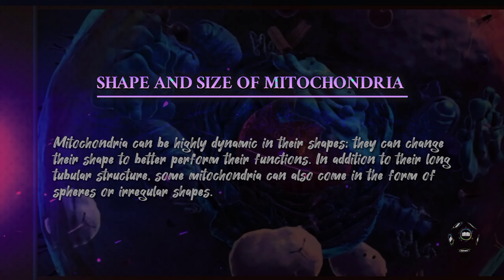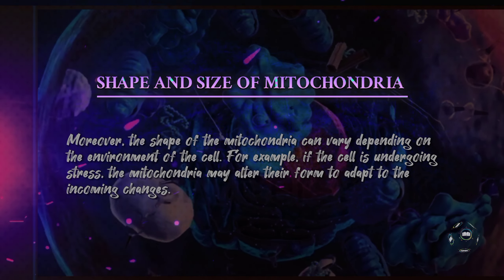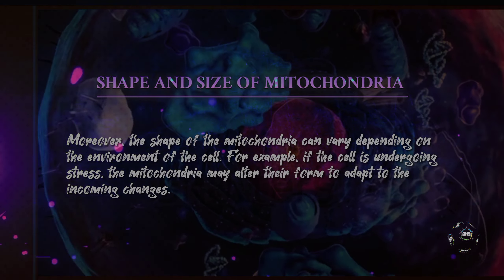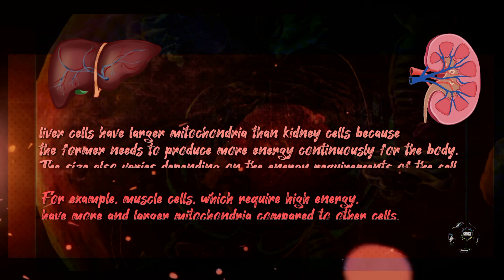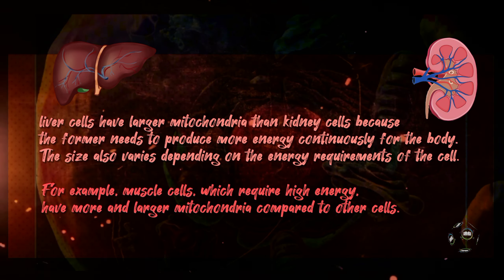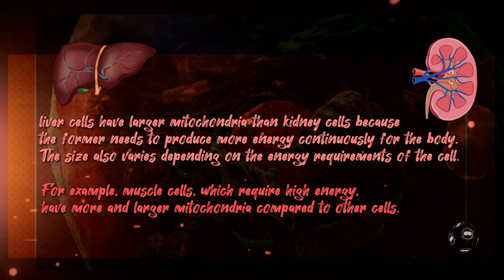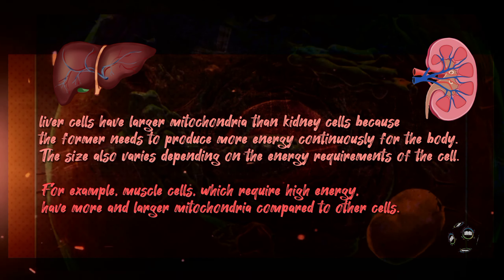Plus, some mitochondria have a tubular structure, but others come in the form of spheres or irregular shapes. Liver cells need a lot of energy to carry out their functions, so their mitochondria are larger than those in kidney cells. This is because liver cells need to constantly produce energy to keep our bodies functioning properly.